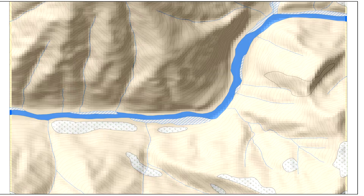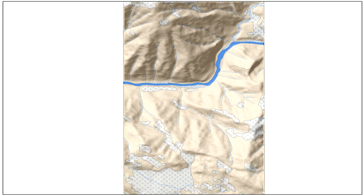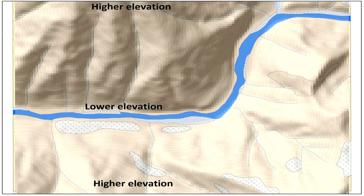Rivers usually flow in valleys through the lowest ground in an area. An area is usually bounded by high ridges on both sides. Thus, an area can be supposed to be surrounded by high ground on both sides of the lowest ground.